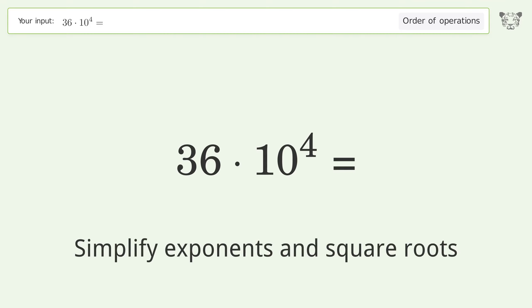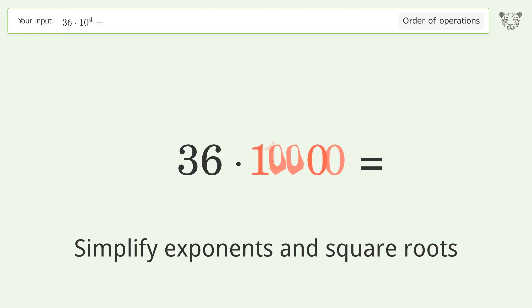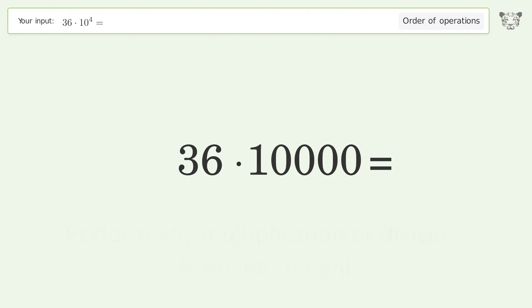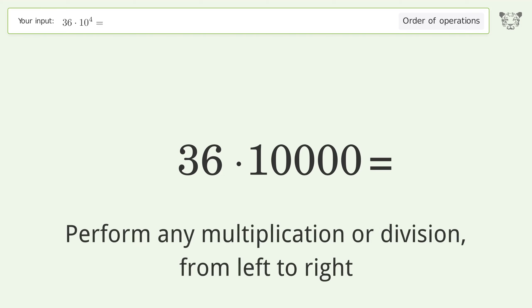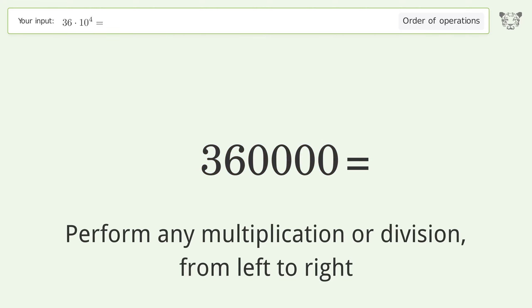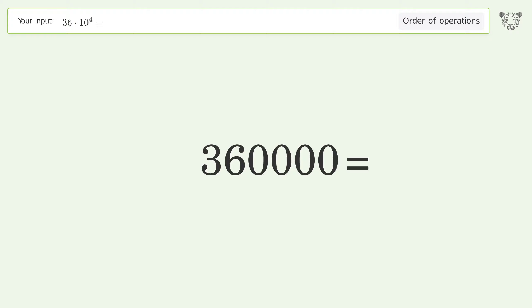Simplify exponents and square roots: 10 to the power of 4 equals 10,000. Perform any multiplication or division from left to right: 36 times 10,000 equals 360,000. So the final result is 360,000.